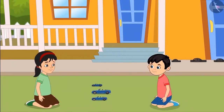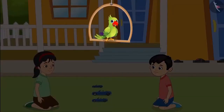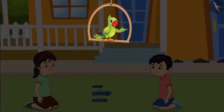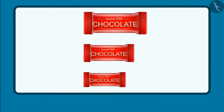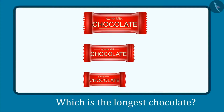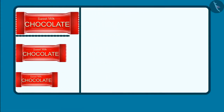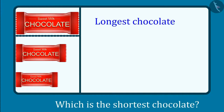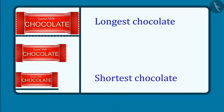Come on, now let's play Chotu. So kids, now you can also identify the longest object and the shortest object out of three objects. Come, let's see. These are three chocolates. Can you tell me which is the longest chocolate out of these? Yes, this chocolate is the longest. And which is the shortest chocolate out of these three? Yes, this chocolate is the shortest. Out of these three chocolates, this is the longest and this is the shortest.